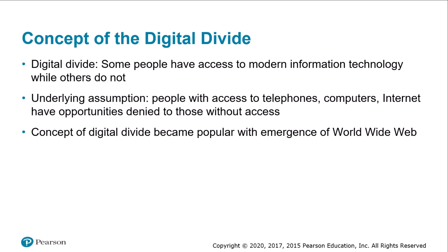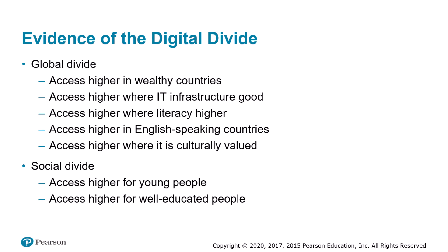The idea of a digital divide became popular in the mid-1990s with the rapid growth of the World Wide Web. According to Pippa Norris, the digital divide has two fundamentally different dimensions: first, the global divide, and second, the social divide. The global divide refers to the disparity in internet access between more industrialized and less industrialized nations. The social divide refers to the difference in access between the rich and the poor within a particular country.